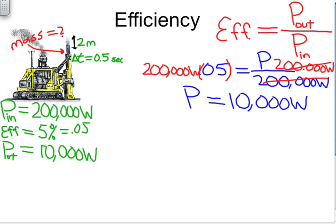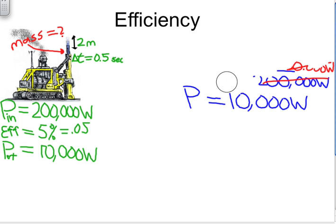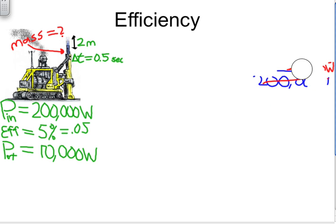So, again, what we really want to find is the mass. So I will erase this stuff so that we have more room to work. And recall that power is the change in energy over the change in time. It's the rate of change of energy transfer. So let's start with that equation.